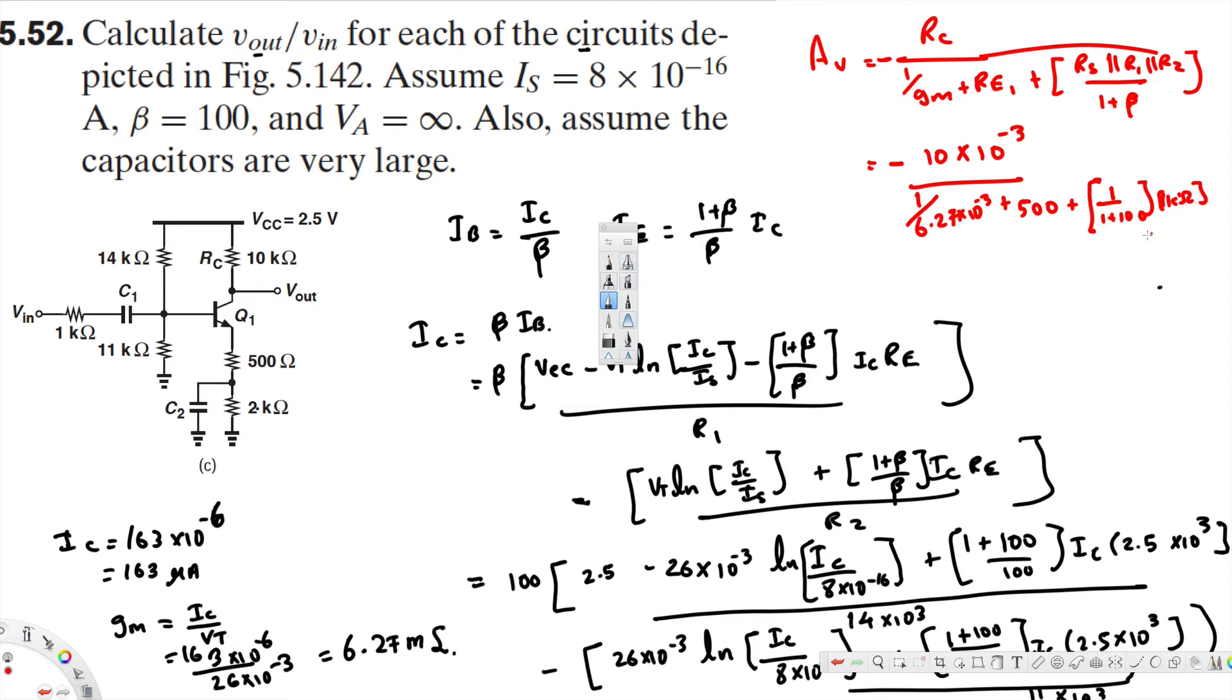Plus 1 over 1 plus 100 times 1 kilo ohm, 1 kilo ohm parallel 14 kilo ohm parallel 11 kilo ohm. And that gives us A_v, that's gain, is equal to negative 14.96. And that's it.